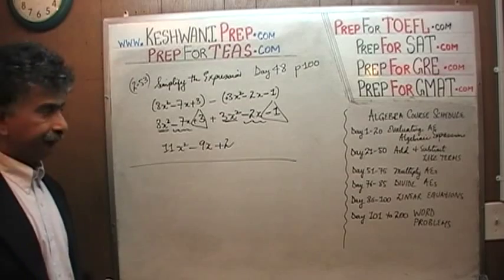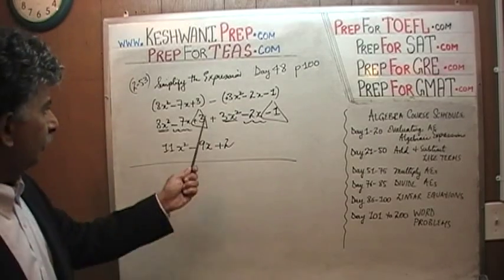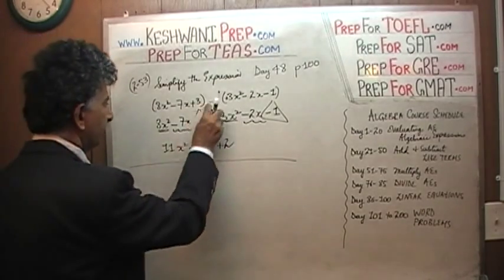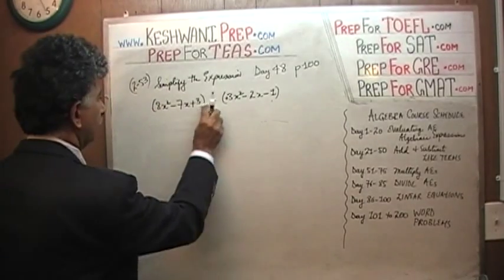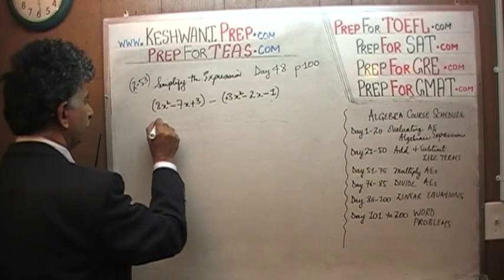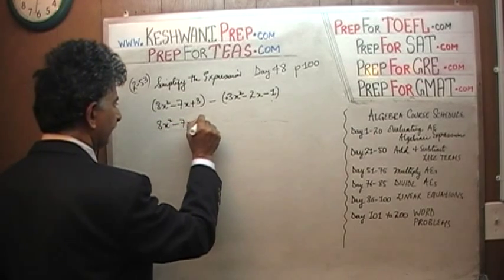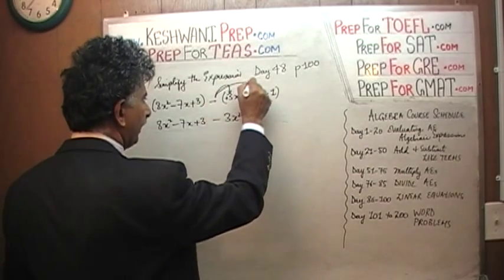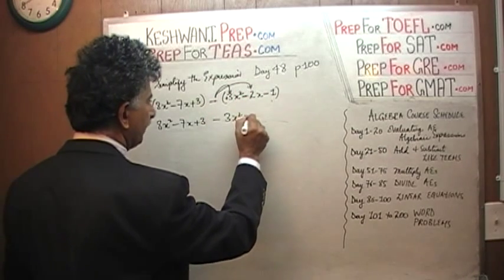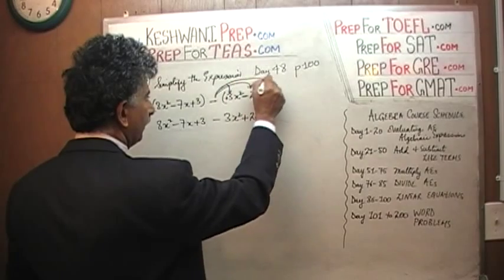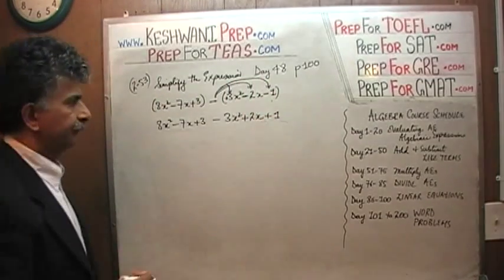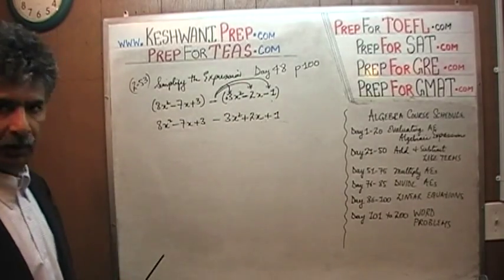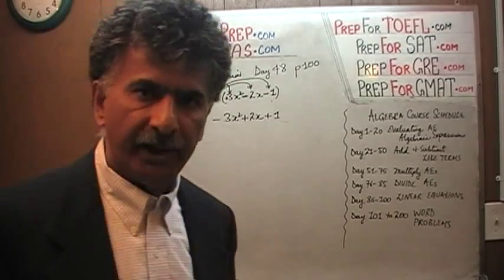When there is a negative in the middle, we just have to slow down a little bit, because now each of these terms are going to be multiplied by negative. So it's the exact same problem, but here we have a negative. So: 8x squared minus 7x plus 3, and now negative times positive gives us negative 3x squared, negative times negative gives us positive 2x, and negative times negative becomes positive 1. In other words, we have to switch all the signs: this positive becomes negative, this negative becomes positive, and negative becomes positive.